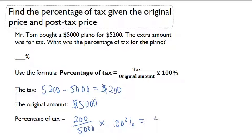And that's going to give us 4%. So the tax for this piano for Mr. Tom was 4%.